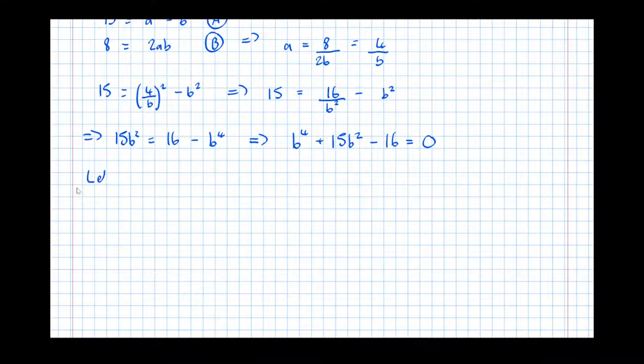So if we let u equal b squared, our substitution, this implies that u squared plus 15u minus 16 equals 0. Factorising, we get u plus 16 times u minus 1 equals 0.